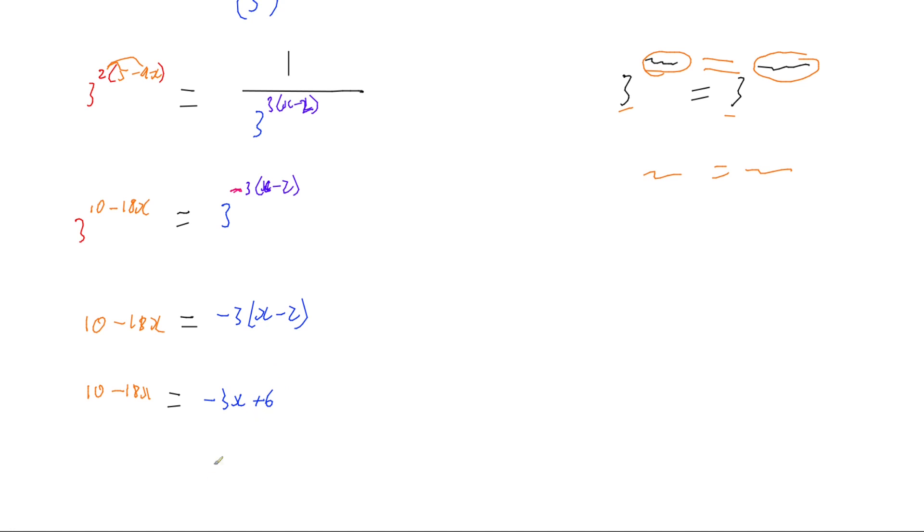So then if I try and move things around, let's subtract 6 from both sides and then let's add 18x to both sides. So 10 minus 6 is going to give us 4 on the left, and adding 18x to both sides is going to mean that we've got negative 3x plus 18x which is going to give us 15x.